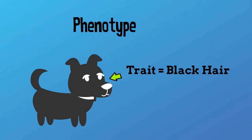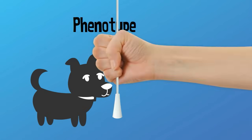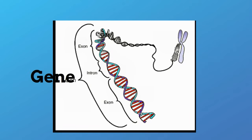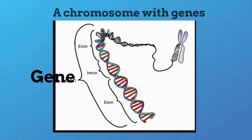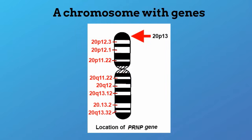Your genetic information is stored in your chromosomes on sections called genes. A gene is a portion of DNA that codes for a trait. The following picture illustrates this. If you look at this drawing of a gene, the different sections are your genes.